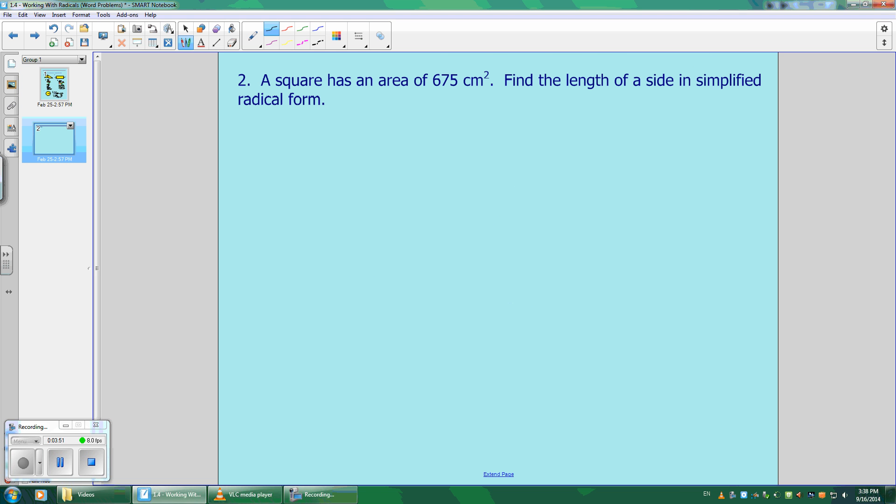So the next question for this tutorial is, a square has an area of 675 centimeters squared. Find the length of a side in simplest radical form. I would like to add a square in here just for visual purposes. So your square has an area of 675. Each of the sides are the same because obviously it's a square. And if one side is x, it makes the other side is x.